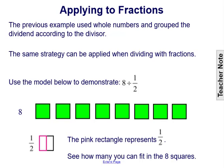So here we still have our 8 squares because that was the dividend. This pink rectangle is representing one half. Notice it's one half of the green square. So let's see how many we can fit into the 8 squares that would tell us our quotient.